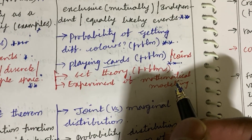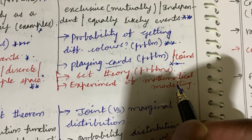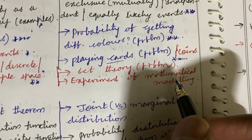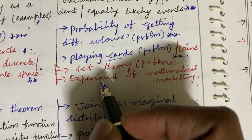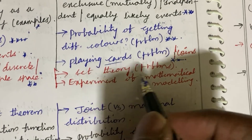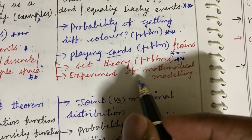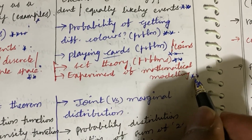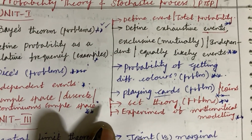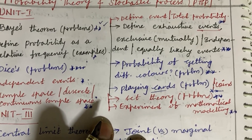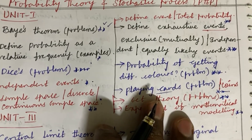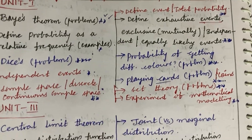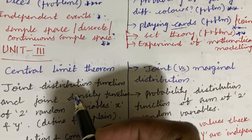Probability of getting different colors — a problem related to different colors will be given and you will be asked to work out the probability. Problems related to coins and playing cards are also said to be the top most questions. You need to work out compulsory all the concepts. Define the term set theory and problems related to it, and explain the term mathematical modeling of an experiment.